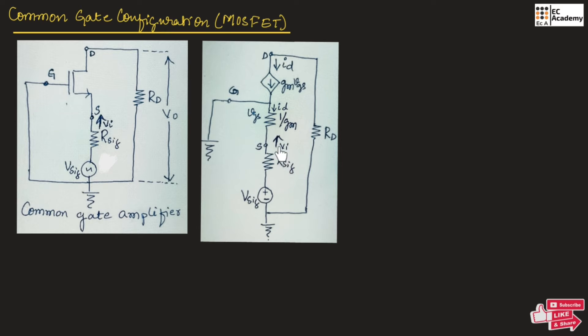From this circuit we can say that the input resistance can be given as 1 by gm, and the output resistance can be written as rd.